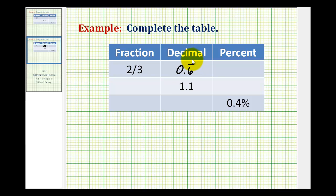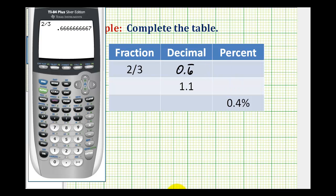Now to convert a decimal to a percentage we multiply by 100 and then add a percent symbol. So with the decimal value in the calculator we can just multiply this by 100. So as a percentage this would be 66.6 repeating or 66 and two-thirds percent.